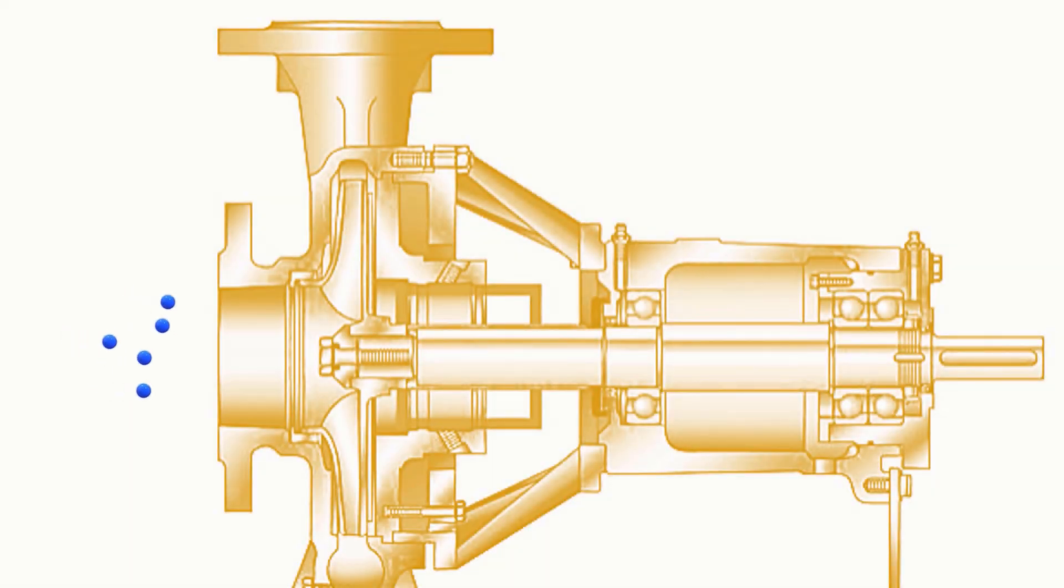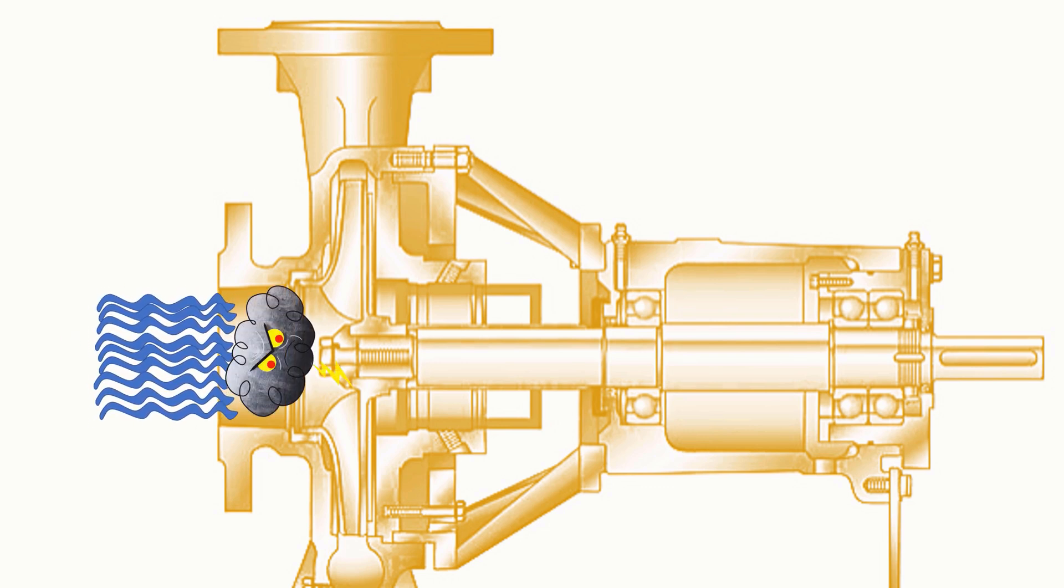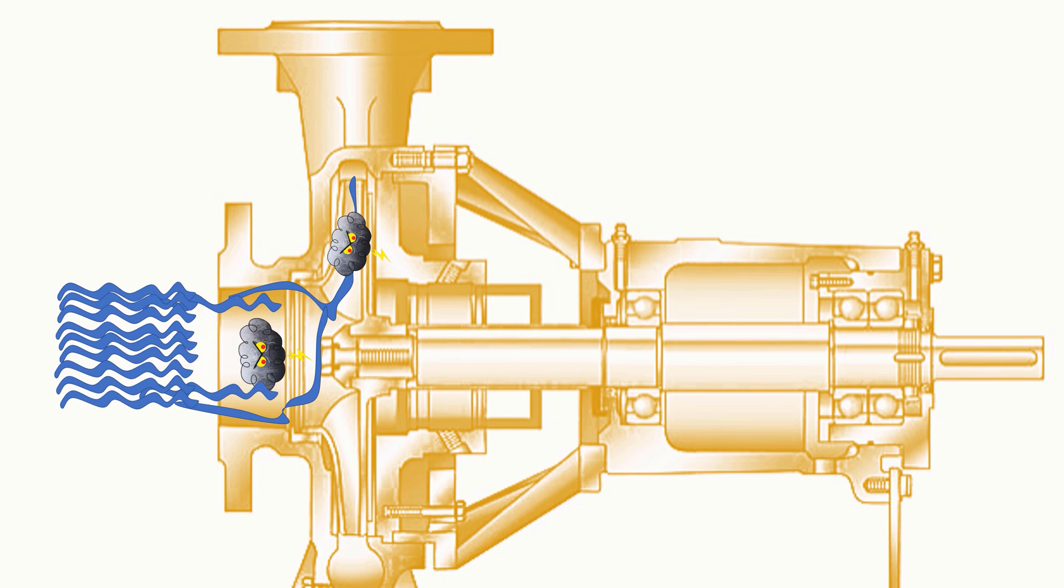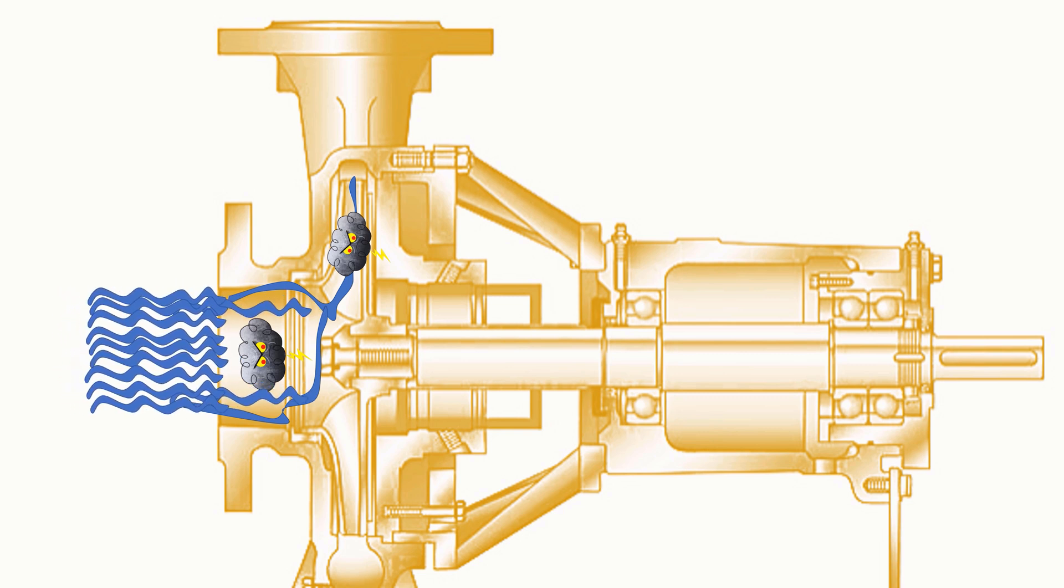An air lock or vapor lock is a restriction or complete stoppage of liquid flow caused by air accumulation, mostly at the pump inlet of a liquid fill pump system. Now let's look at how it happens in the pump system.